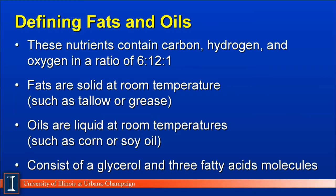Let's begin by defining what fats and oils are. These nutrients contain carbon, hydrogen and oxygen in a ratio of 6 to 12 to 1. Notice the ratio is much lower in oxygen, and this will be important a bit later. Fats are those products that are solid at room temperature — examples would be tallow and grease. Oils on the other hand are liquid at room temperature — examples would be corn or soy oil.